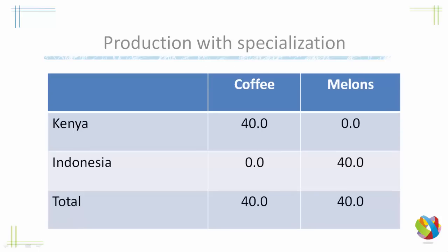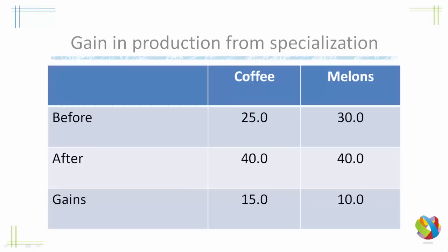By only producing coffee, Kenya produces 40 coffees, and by only producing melons, Indonesia produces 40 melons. So we now have a total of 40 coffees and 40 units of melons. Let's compare this with a before and after. Before, the world production of coffee was 25 and the world production of melons was 30. Now we've gone up to 40 for both.